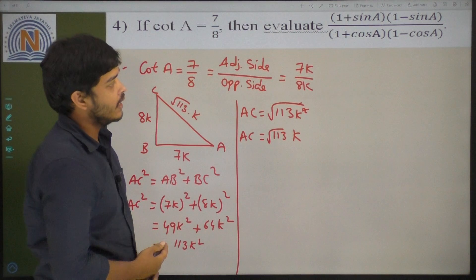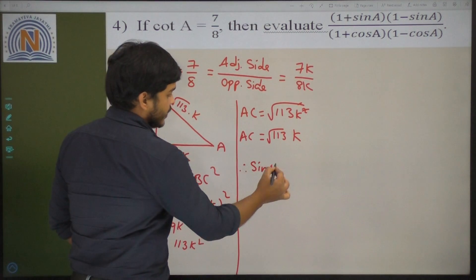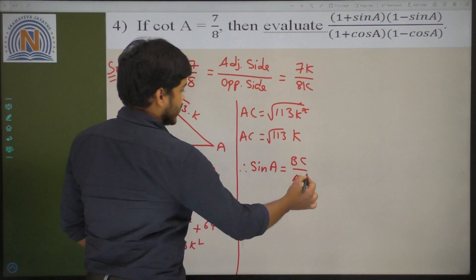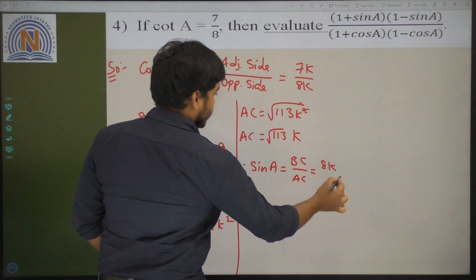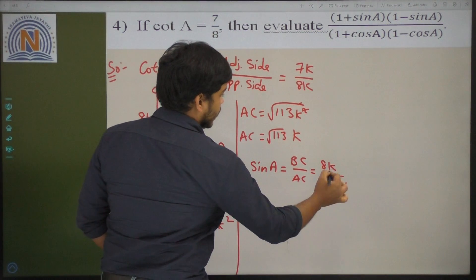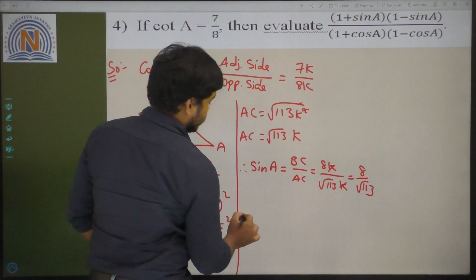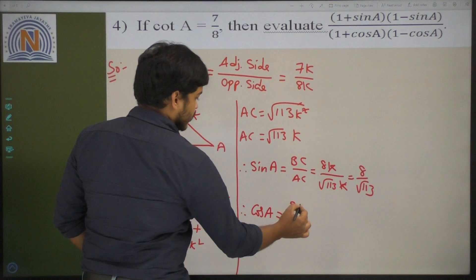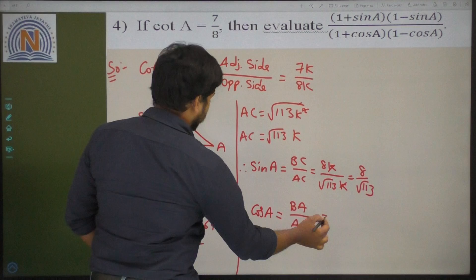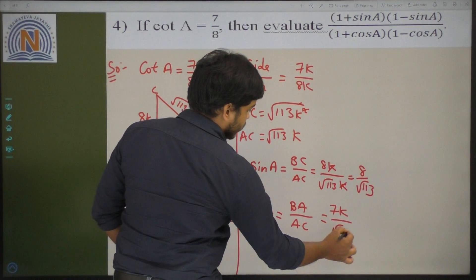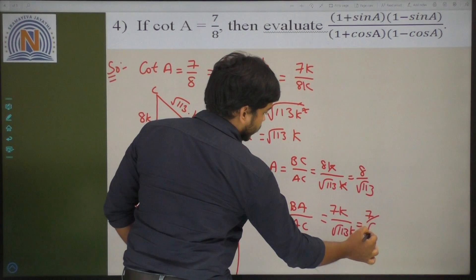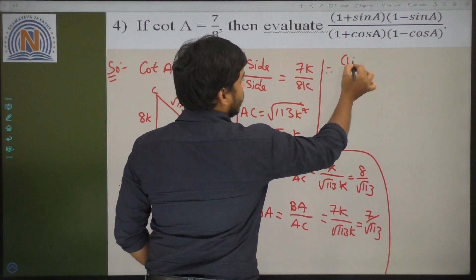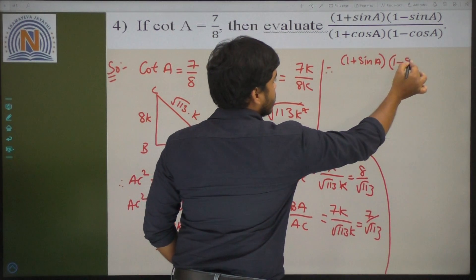Now we need to calculate sin A and cos A. Sin A is opposite by hypotenuse — opposite side BC by AC. BC value is 8K by root over 113K — K and K cancel — so sin A equals 8 by root 113. Now cos A is adjacent by hypotenuse, that is AB by AC. AB value is 7K by root over 113K — both cancel — then cos A equals 7 by root 113.